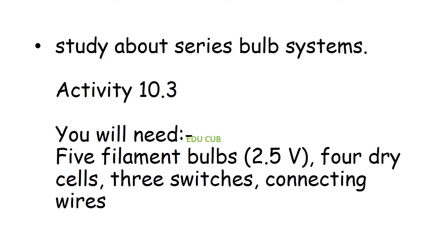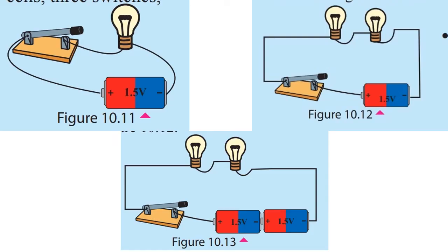In the third activity, you have to study about the series bulb system. You will need five filament bulbs, four dry cells, three switches, and connecting wires. Look at the first diagram: connect one bulb with a switch and cell as in the figure. Then connect two bulbs with a switch and cells as shown in the second figure.